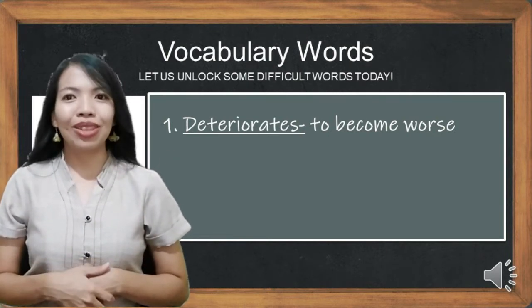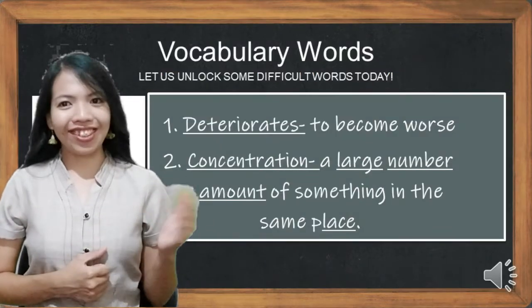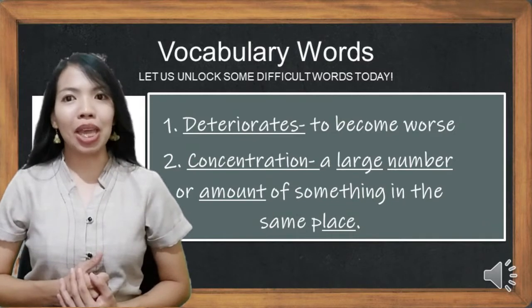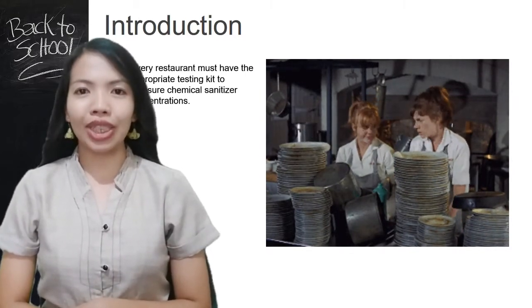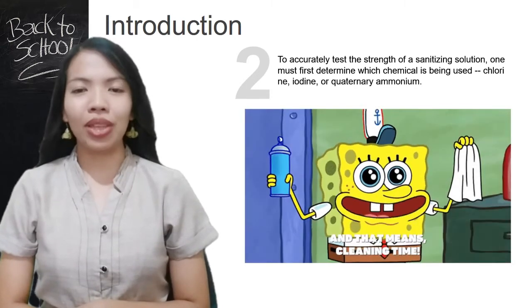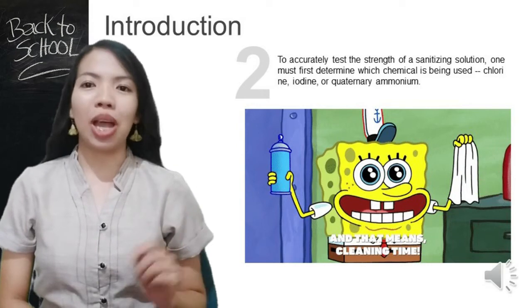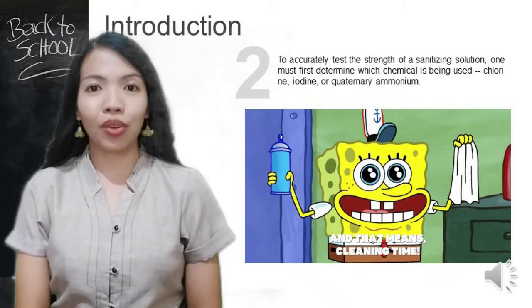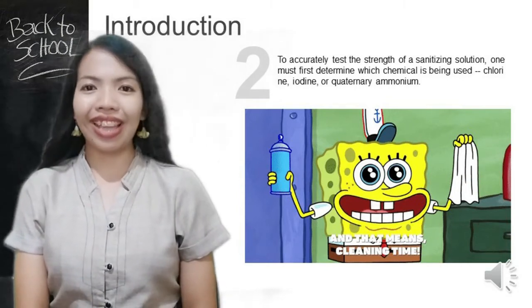Deteriorates means to become worse. Concentration means a large number or amount of something in the same place. Every restaurant must have appropriate testing kits to measure the chemical sanitizer concentration. To accurately test the strength of your chemical sanitizer, you must first determine what kind is being used — chlorine, iodine, or quaternary ammonia. Test kits are not interchangeable, so check with your chemical supplier to ensure you are using the correct kit.